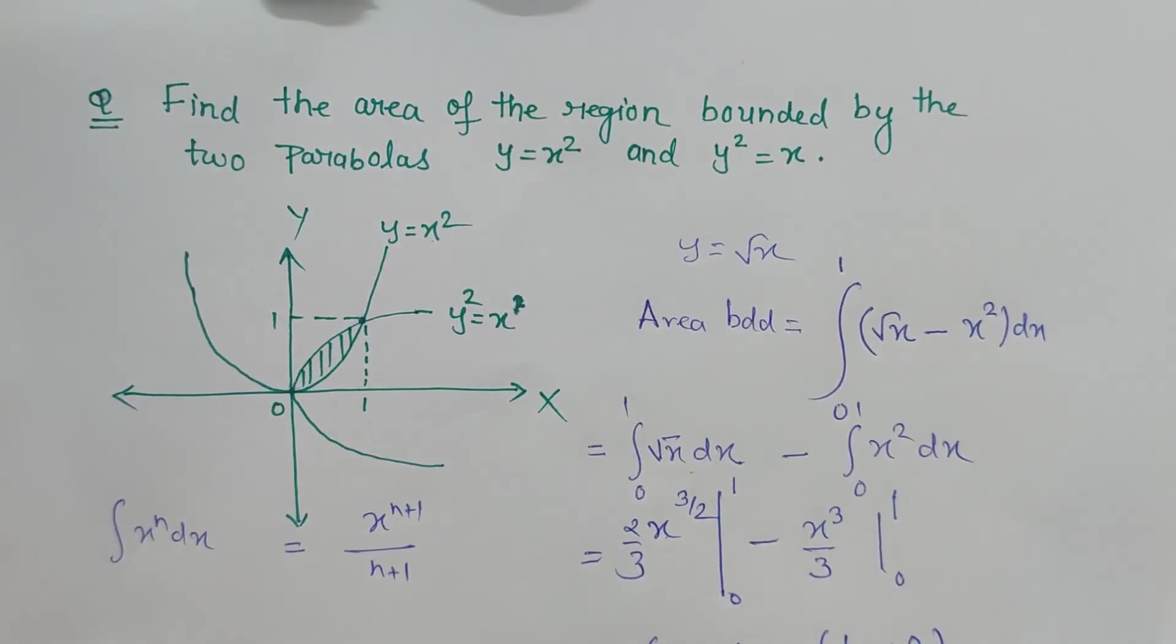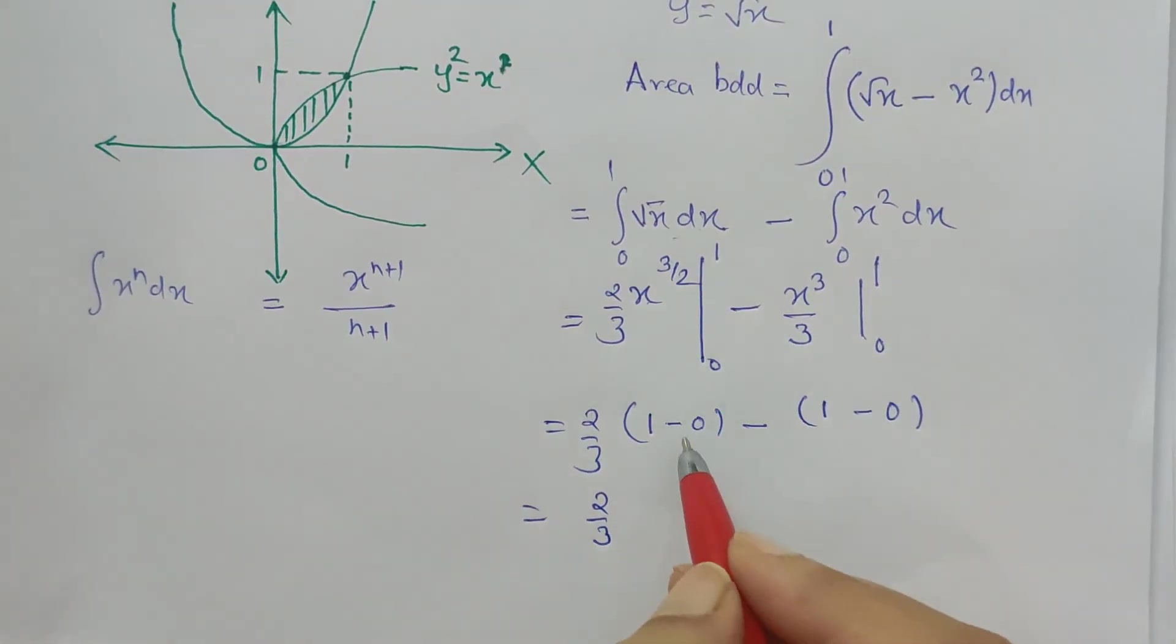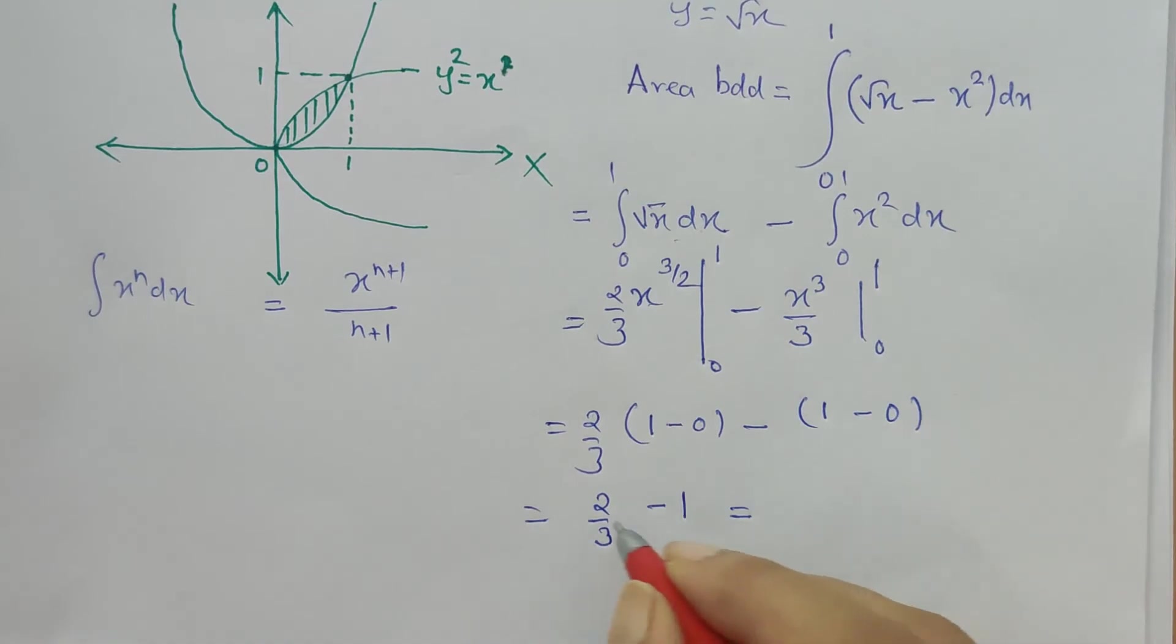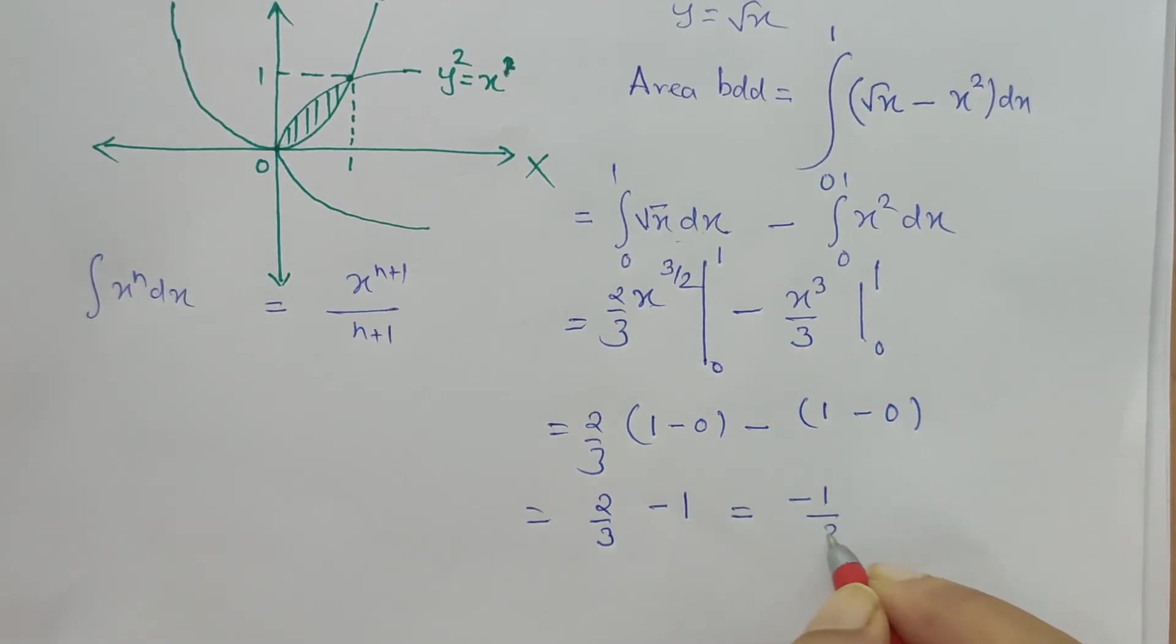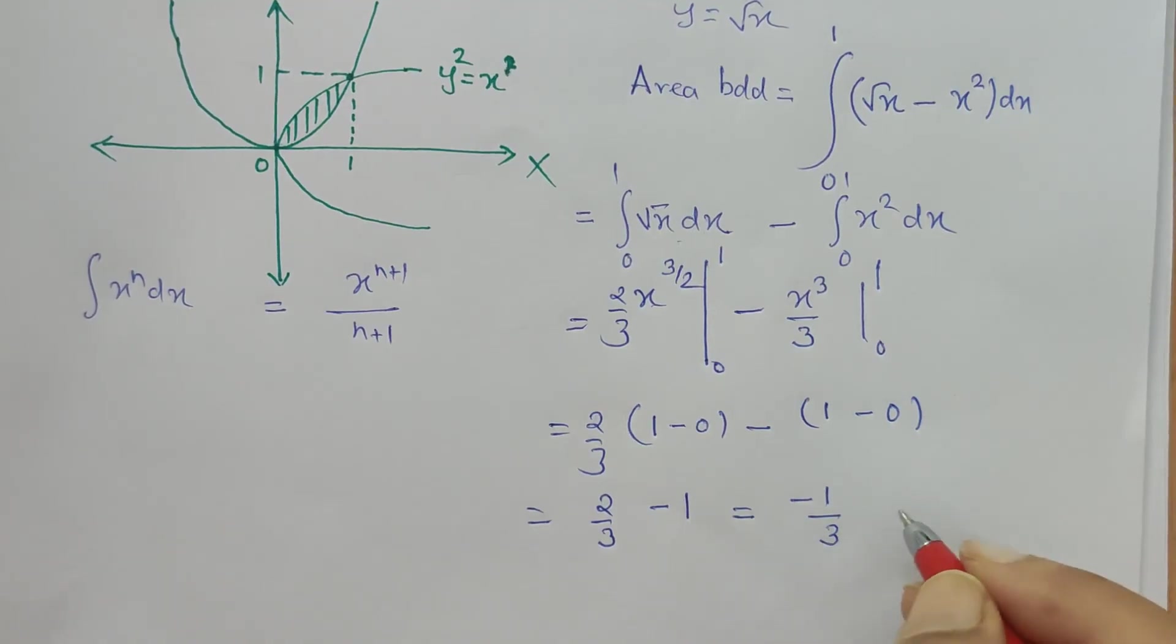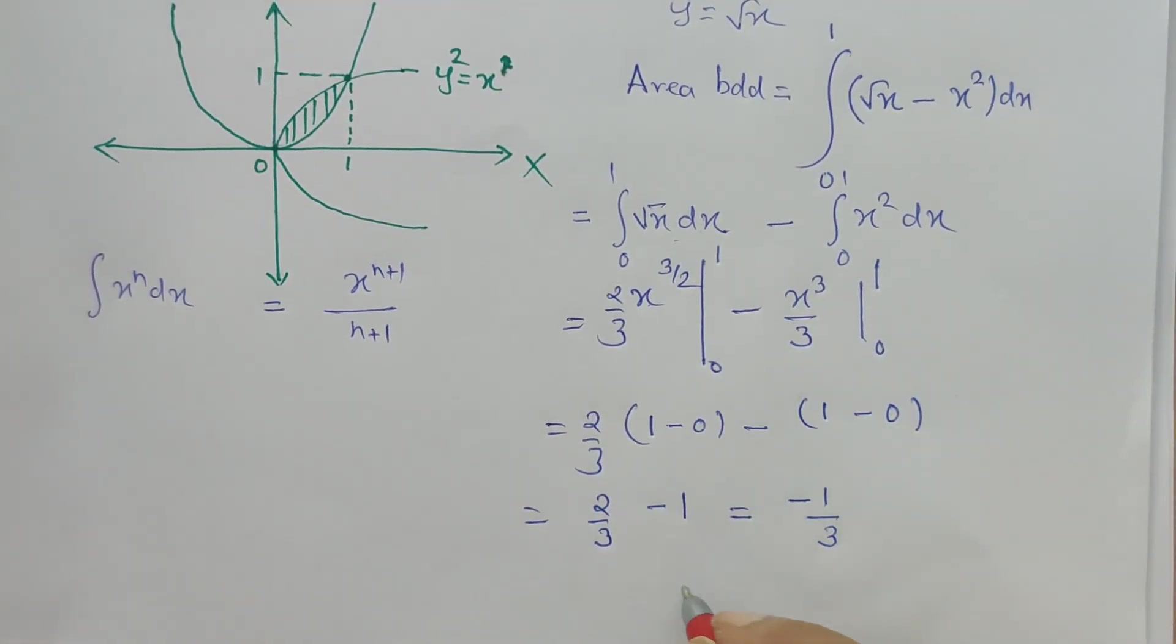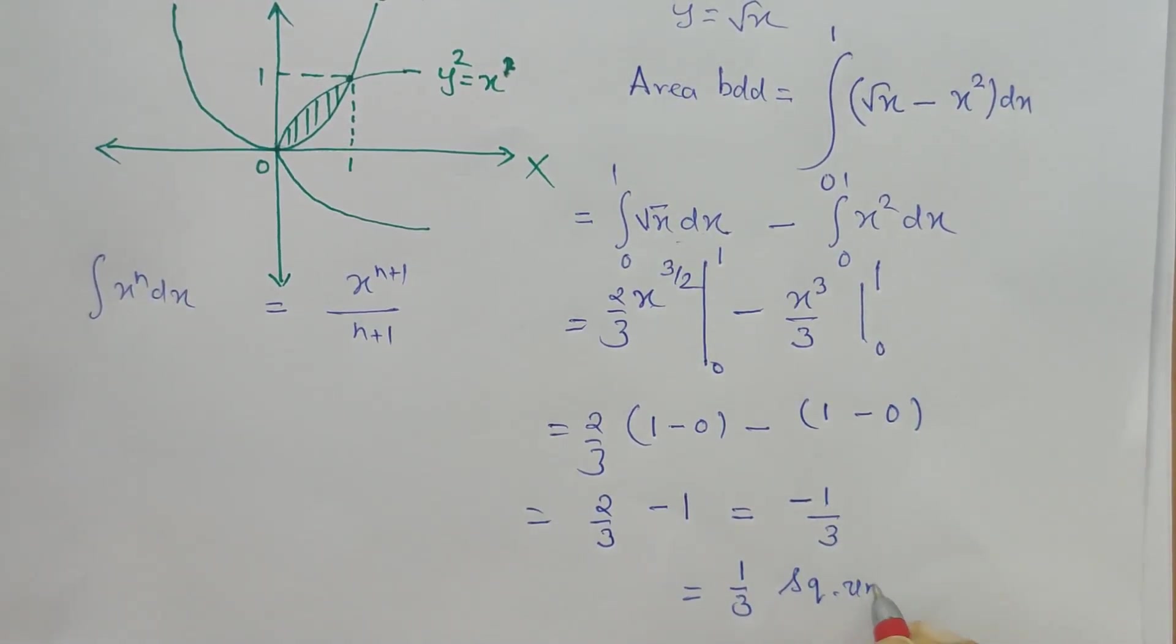Let's solve it: 2/3 minus 1. The subtraction is 2 minus 3 equals minus 1, so minus 1/3. But as we know area is always positive, so we ignore this negative sign. Therefore, 1/3 square unit is the area.